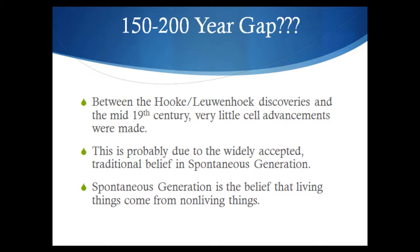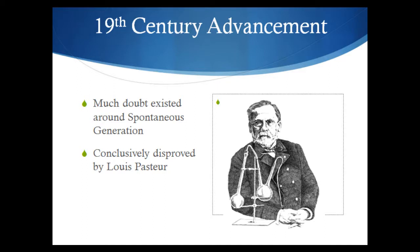His name is Louis Pasteur. There was much doubt that existed around this belief of spontaneous generation, and back in the 19th century, Louis Pasteur is the scientist who conclusively disproved it. He did this by a very simple experiment using two flasks with S-shaped necks — the neck looks like an S. What he did was he filled these two flasks with vegetable broth and boiled them. As you know, boiling kills whatever is in there — that's why people say to boil dirty water before you drink it, because it kills all of the microorganisms.